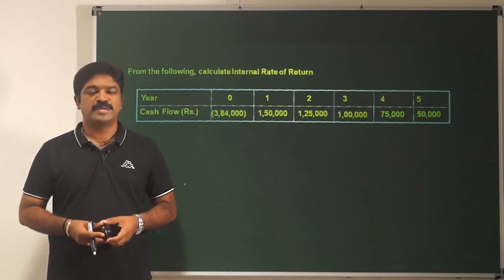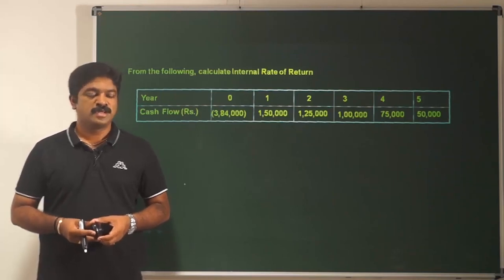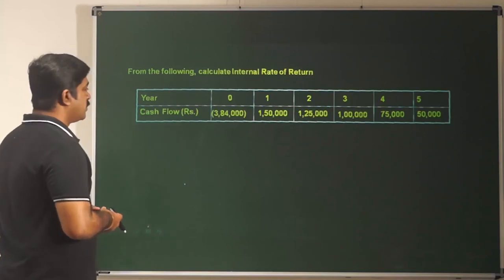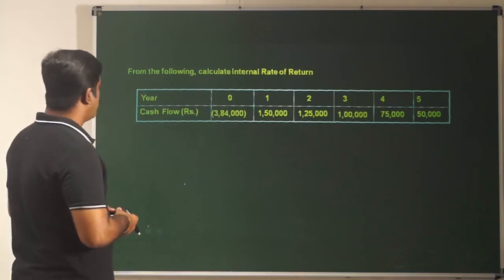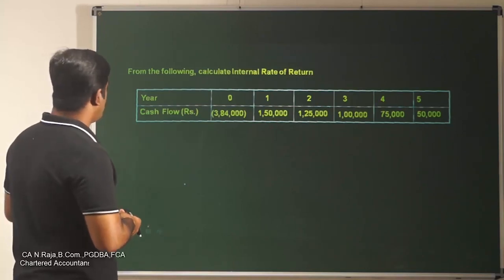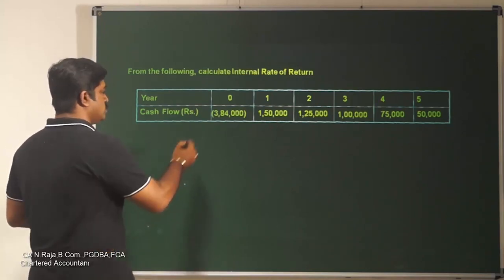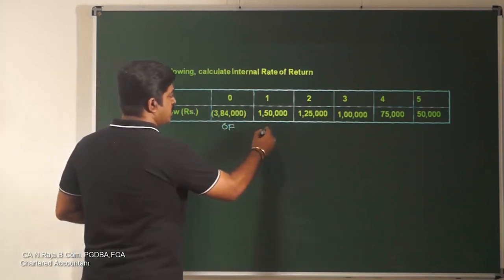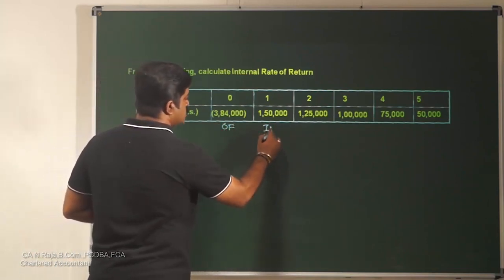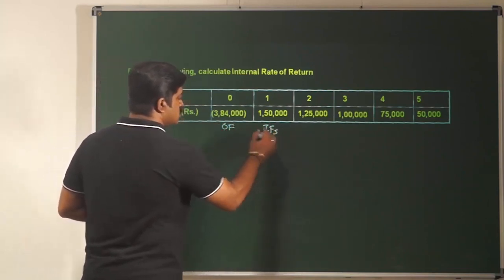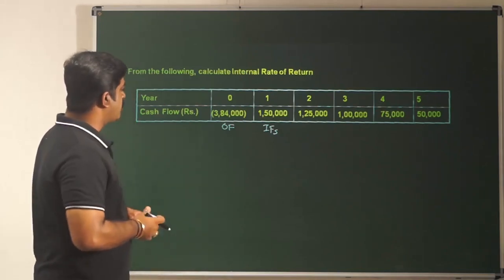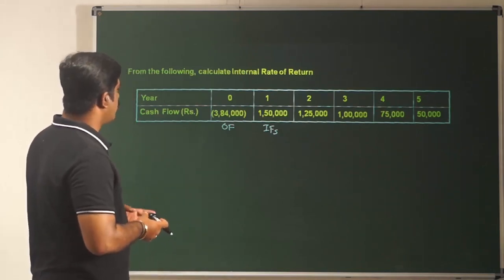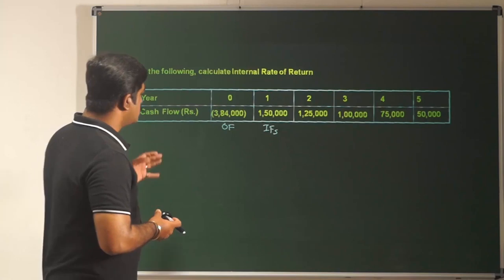Another case study on internal rate of return. We have to calculate internal rate of return where we are given information about cash flows. Year 0 is an outflow, and years 1 to 5 are all inflows. You are given the outflows and inflows for a period of 5 years, and you have to find out IRR.